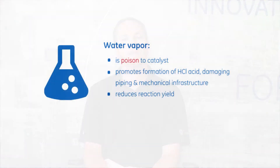So overall that process can be costly for a refiner. In the process of all that, there is moisture present, and moisture or water vapor is a poison — it can damage the catalyst. Moisture can promote the formation of acids which can damage the mechanical infrastructure of a plant or a pipeline. Moisture also affects the yield of the end product, so if you have more moisture you're going to get less desired product at the end.